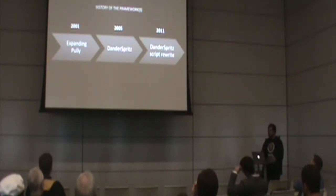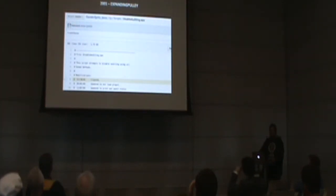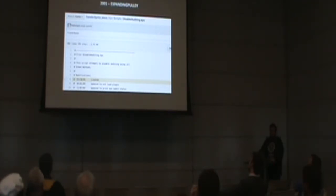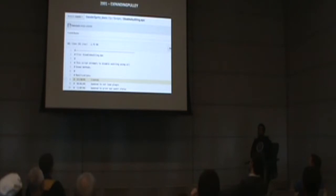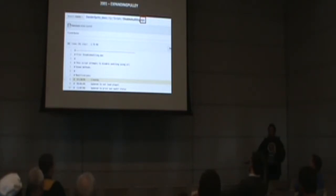In 2011 they rewrote a lot of the plugins in Python. Expanding Pulley — the very first version of this post-exploitation framework — used a custom scripting language. The framework itself was written in C, but plugins and capabilities were written in a custom scripting language called EPS, Expanding Pulley Script. It's sort of a weird mixture of Perl and other languages, but it's definitely custom and interesting to read.